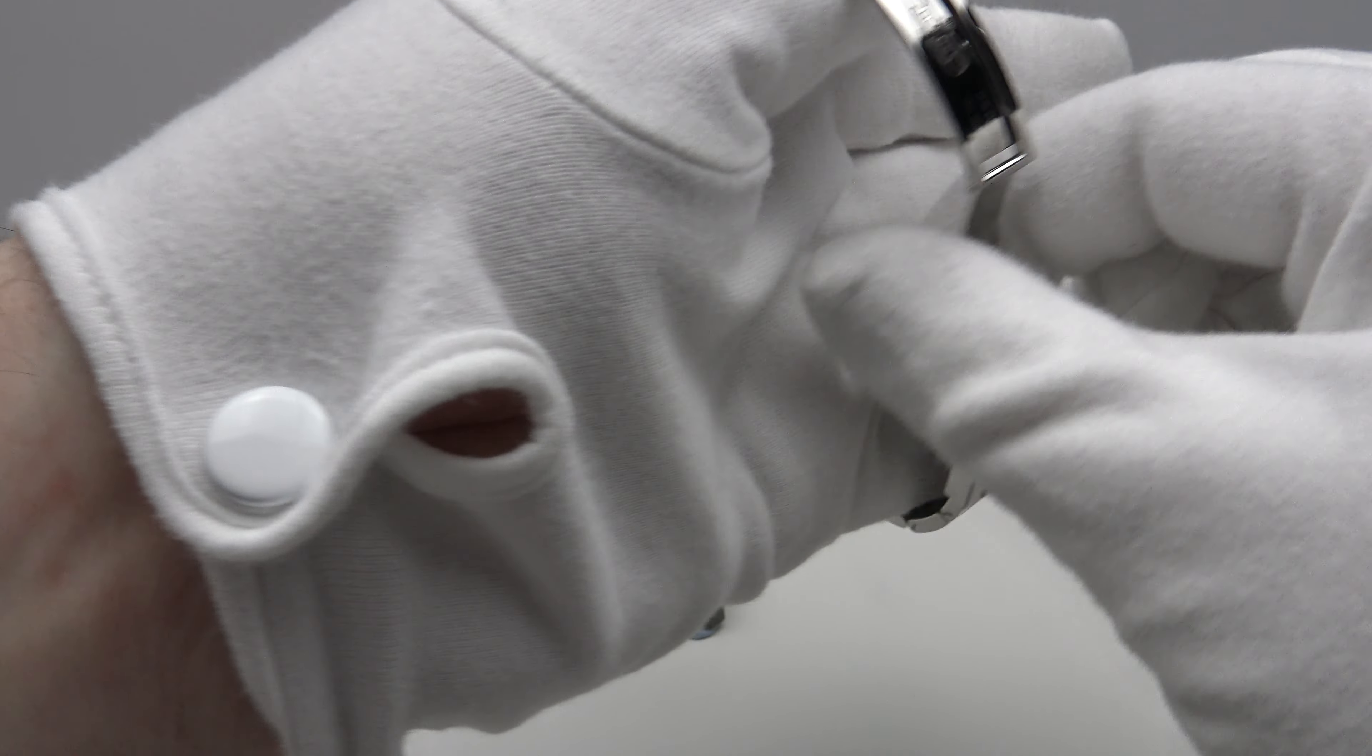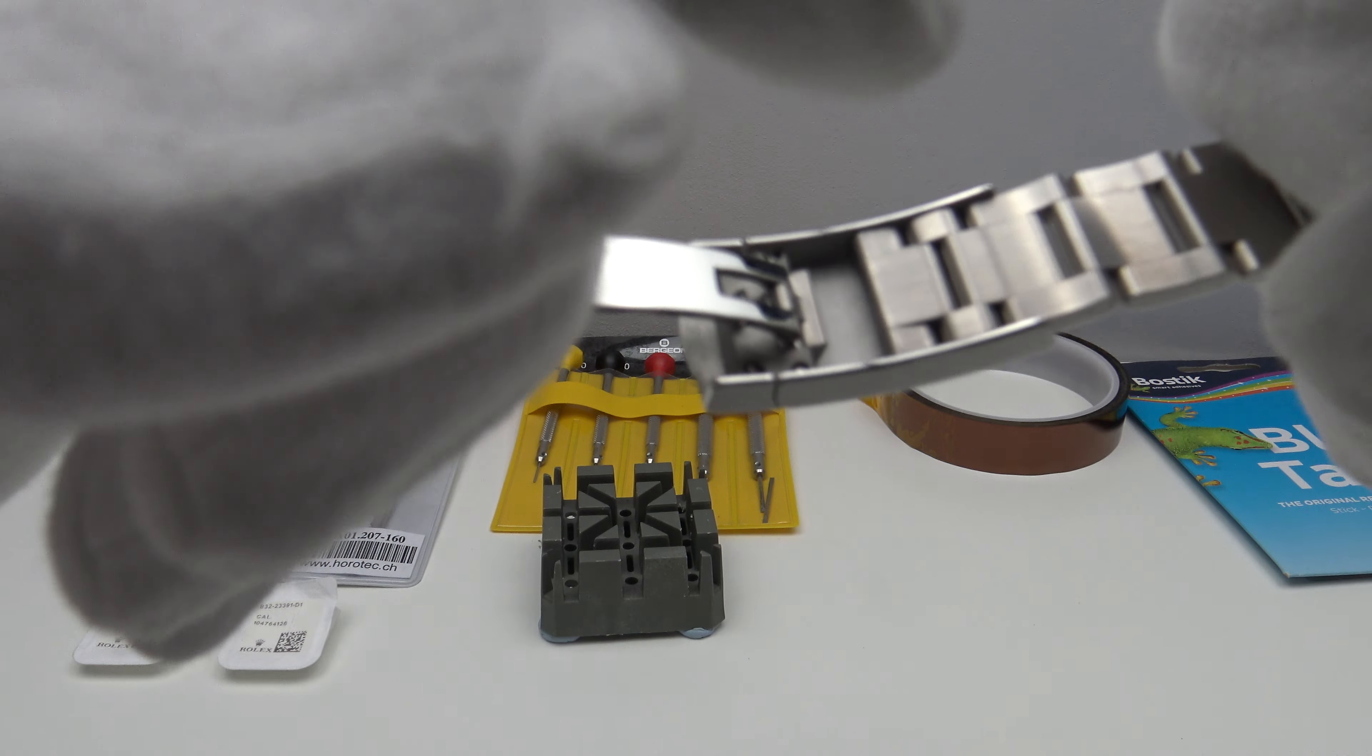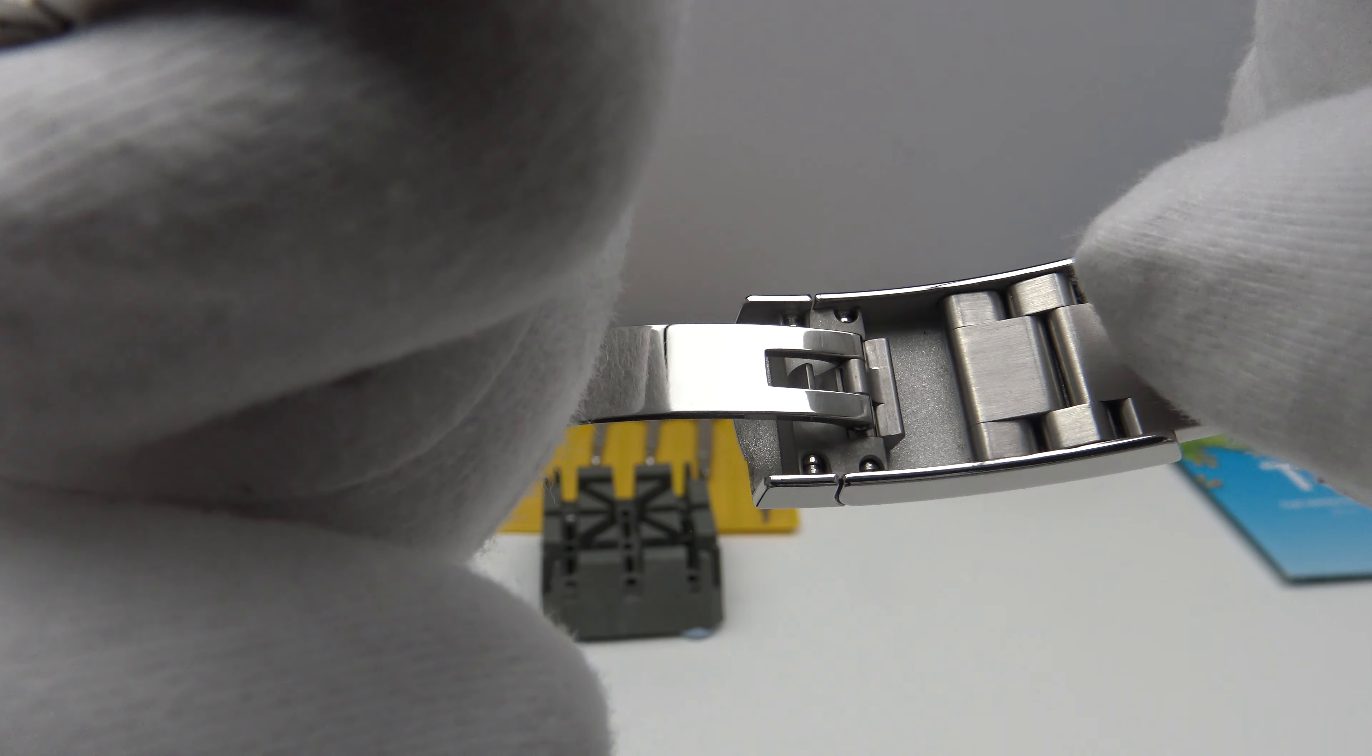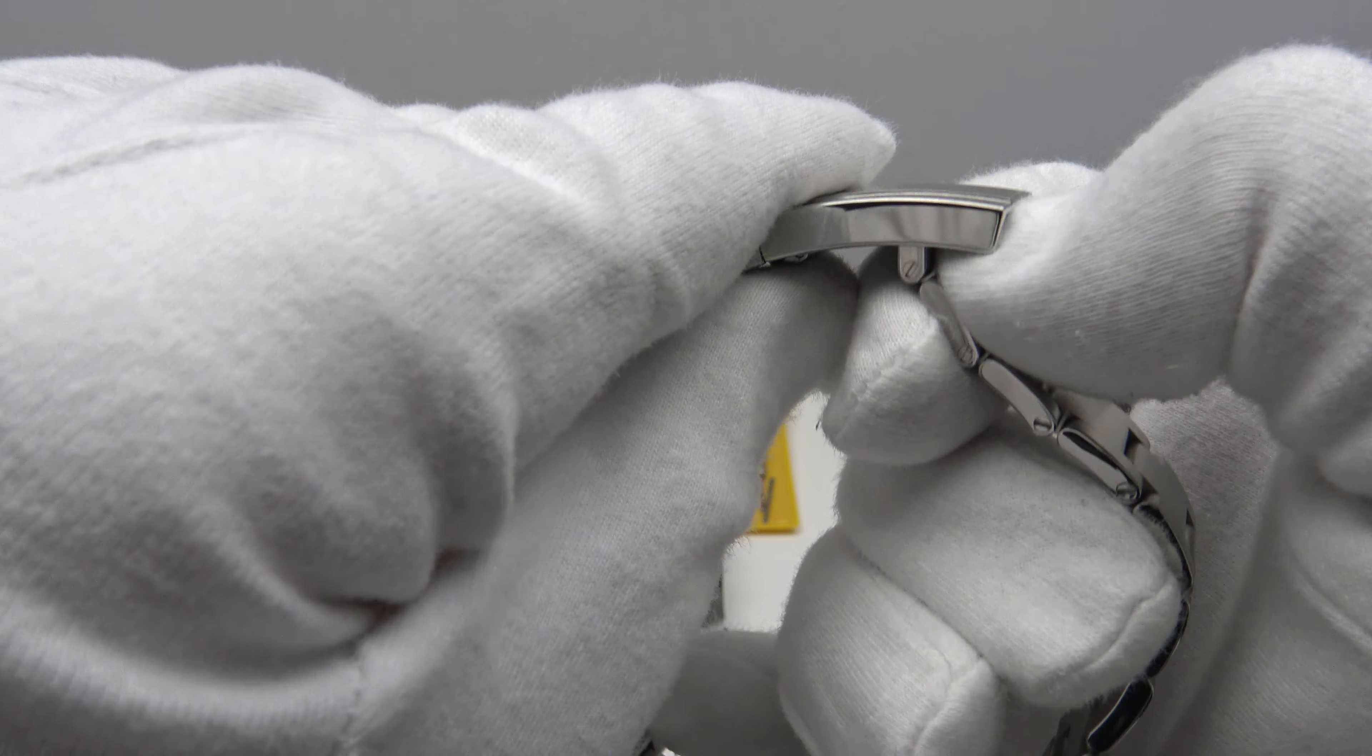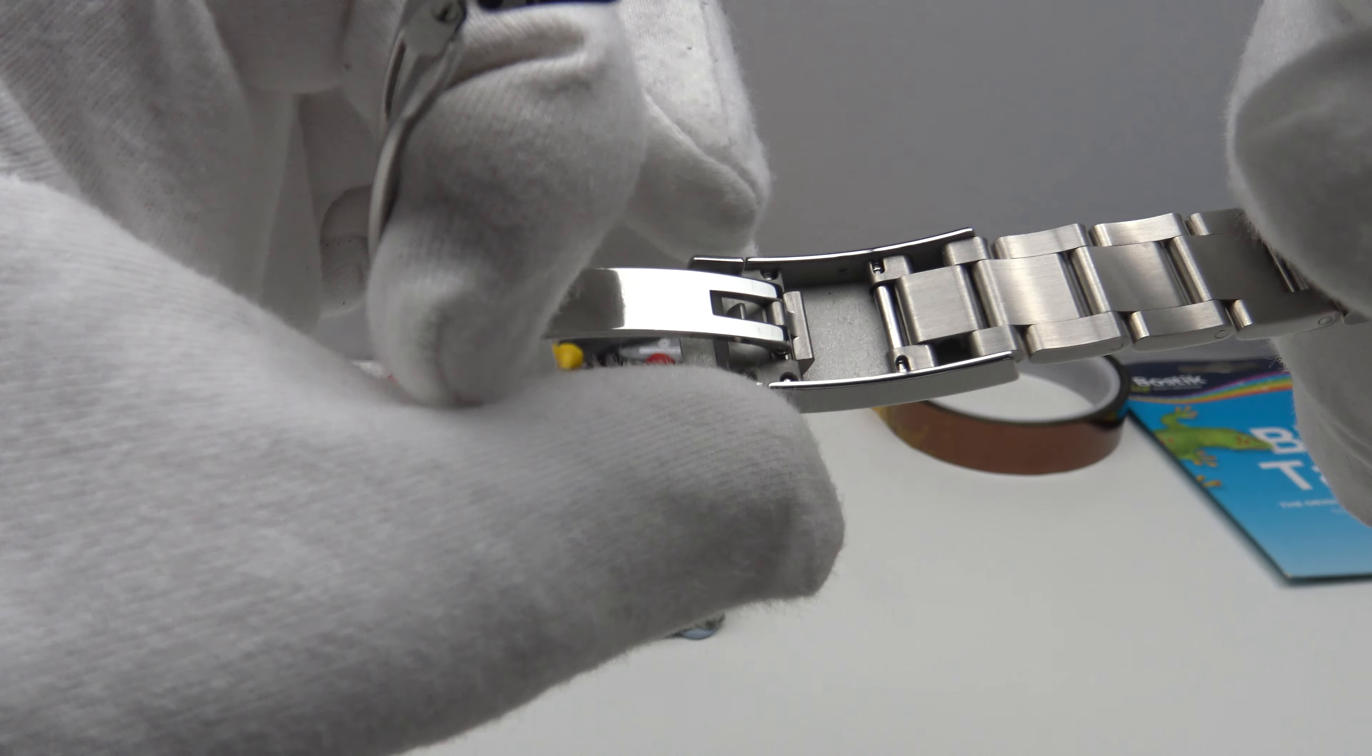On the Oyster Perpetual 41, there are three micro adjustment holes on the interior of the clasp. Now there are three dimples, three pairs of dimples on either side. So looking at this, you might think, well, how do I actually adjust it? There's an easy link extension which one can pop out with a click and that extends the length of the bracelet by five millimeters.